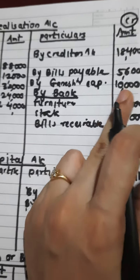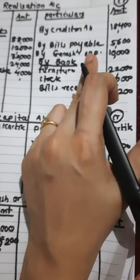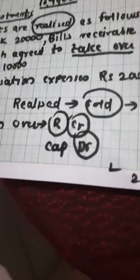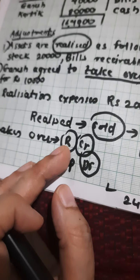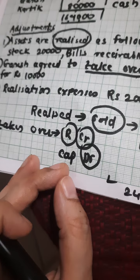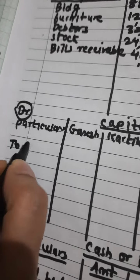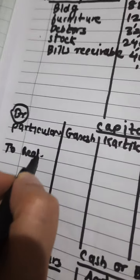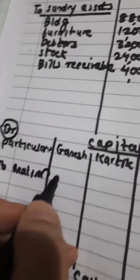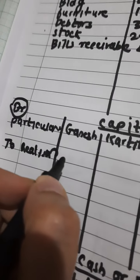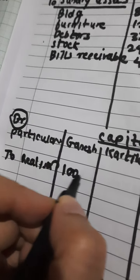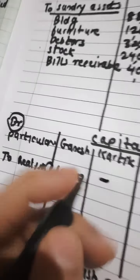The second effect is Capital debit. The short forms are: RCR — Realization Credit; and Cap DR — meaning Capital Debit. Capital debit is the second effect: 'To Realization.' The amount to write in Ganesh's column is 10,000.